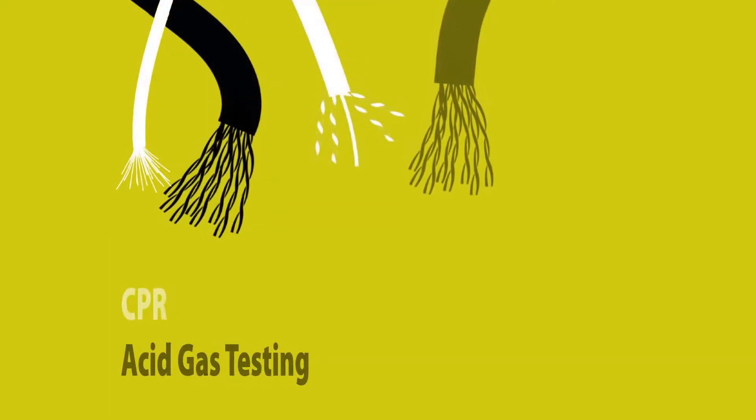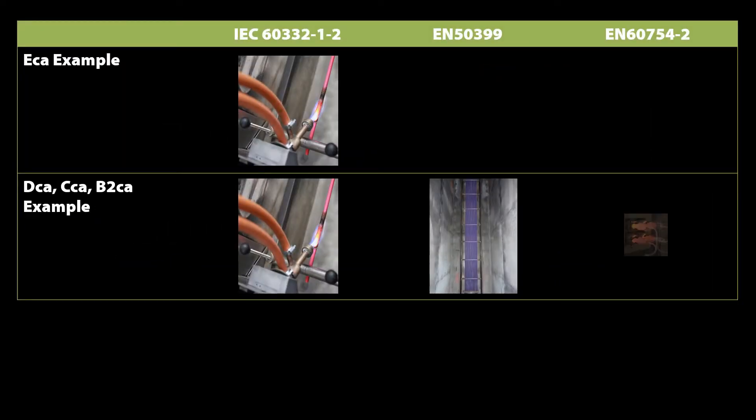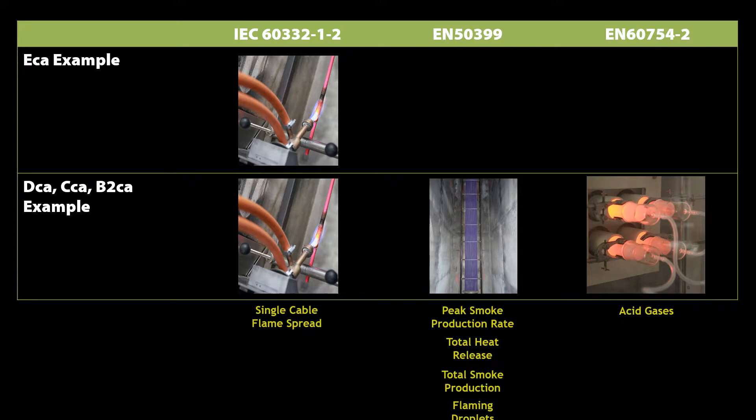This particular presentation relates to the construction products regulation and the general level of misunderstanding and confusion surrounding the testing methods employed to classify cables. We will endeavor to explain the important topic of acid gas testing and the test method used.